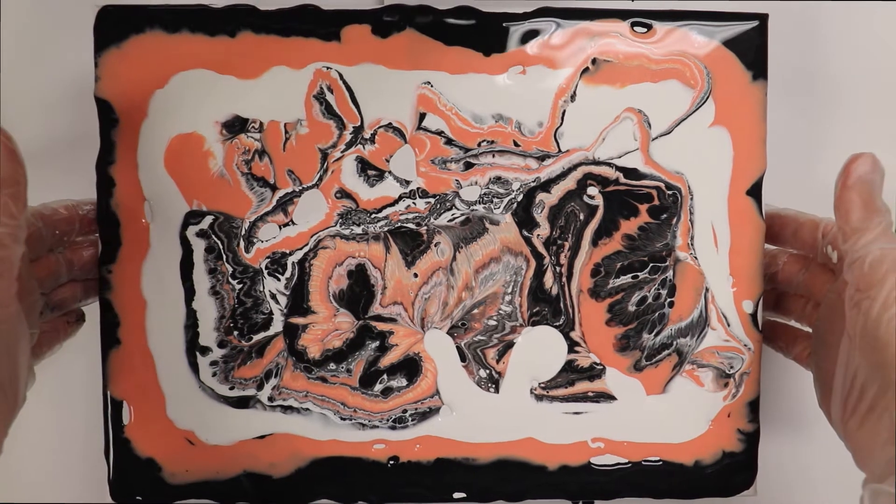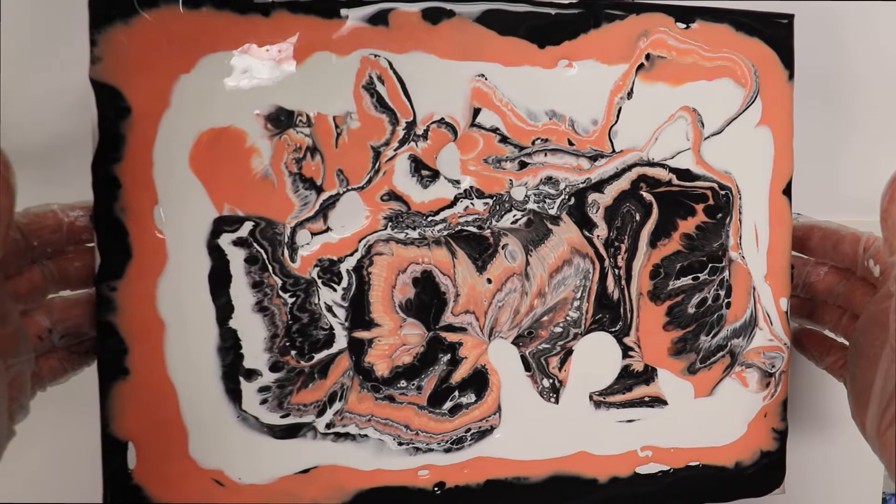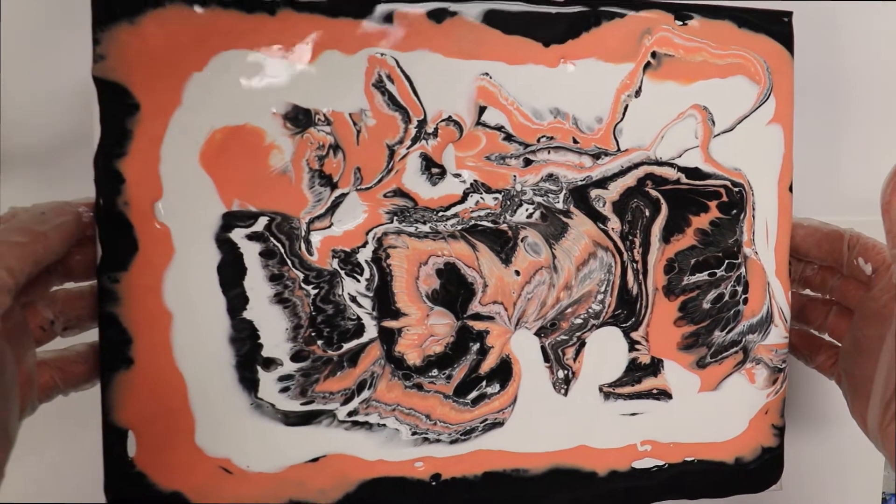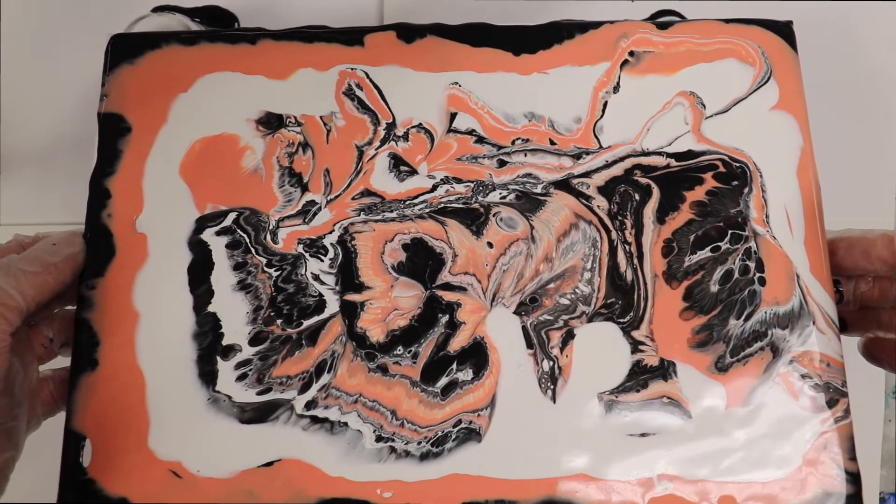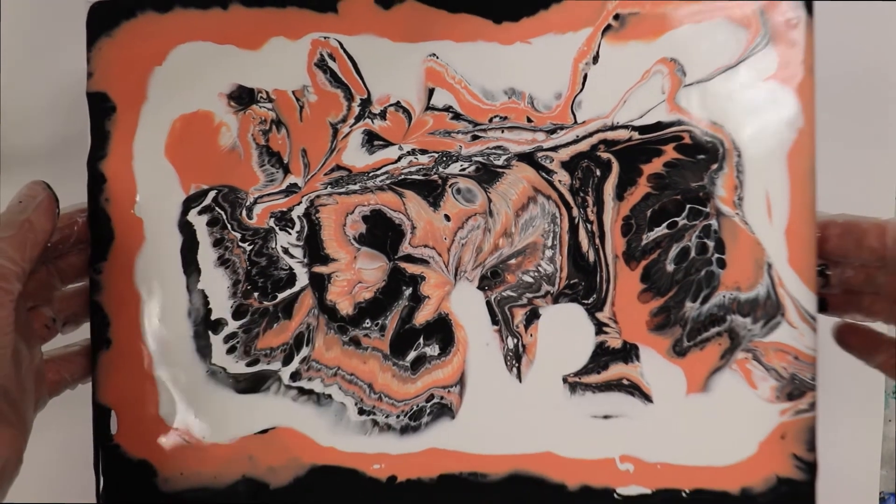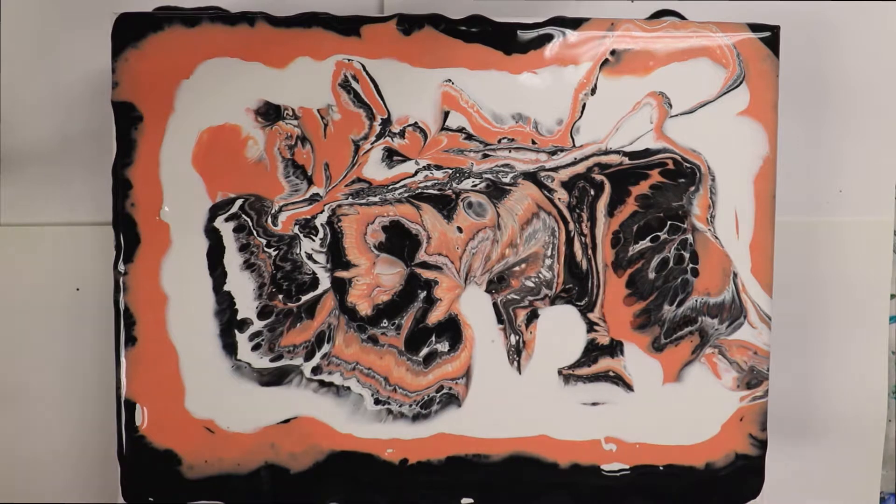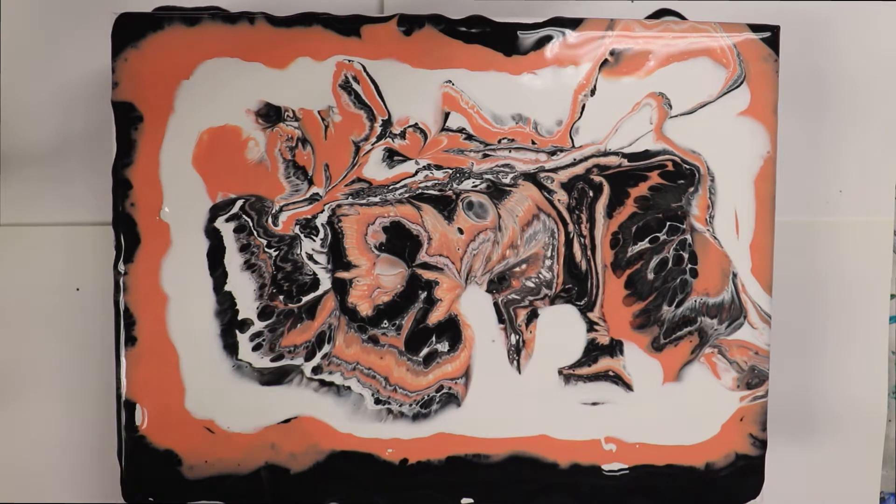Now what you want to do is just gently tilt your canvas. You can start whichever direction you like. It depends on how you want your painting to turn out. Just play with it until you get the look that you want. Another thing you can do is you can take your finger or your popsicle stick and just kind of push the paint around a little if you're not quite satisfied with it. Really it's up to you how you want it.